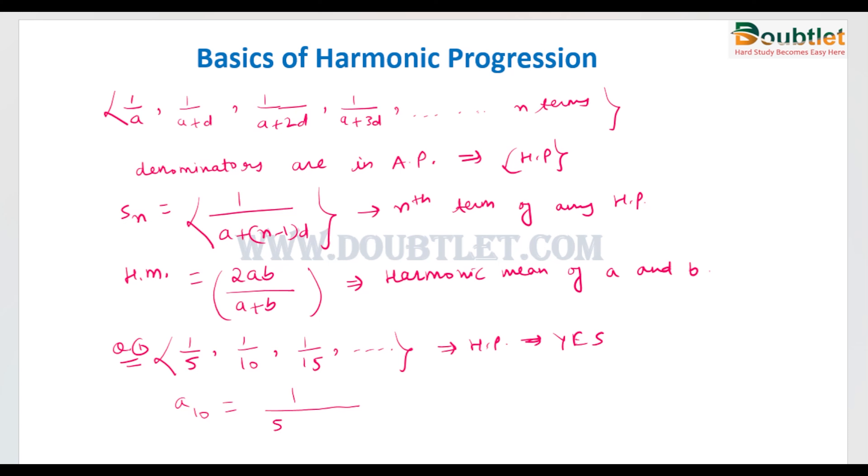If we solve this, this will become 50. So 1 divided by 50 is the 10th term of this harmonic progression. Suppose someone asks you to find the sum of terms of an HP, then a specific formula has not been derived yet, so I will not comment on the sum of the harmonic series formula. This is how we have discussed some basic concepts of harmonic progression.